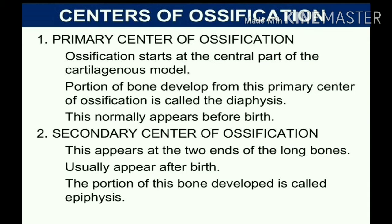There are two centers of ossification: the primary center and the secondary center. The primary center of ossification starts at the central part of the cartilaginous model. The portion of bone developed from the primary center is called the diaphysis, which normally appears before birth. The secondary center of ossification appears at the two ends of the long bone and usually appears after birth.